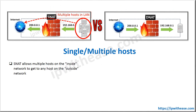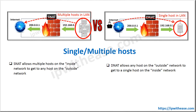The last comparison point is single or multiple hosts. In case of SNAT, it allows multiple hosts which are inside the network — LAN users — who want to access any application or web-facing application over the internet; SNAT is leveraged for that. In case of DNAT, it allows any host on the outside to get to a single host or server inside the network. DNAT is leveraged for this one-to-one NATing.